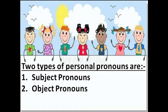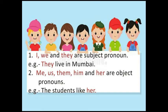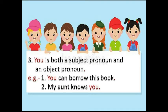Now let us see what are subject pronouns and what are object pronouns. First, I, we and they are subject pronouns. For example: They live in Mumbai. Second, me, us, them, him and her are object pronouns. For example: The students like her. Third, you is both a subject pronoun and an object pronoun. For example: You can borrow this book. And: My aunt knows you.